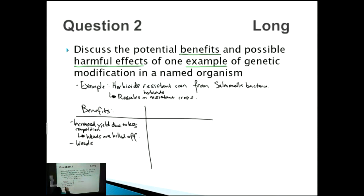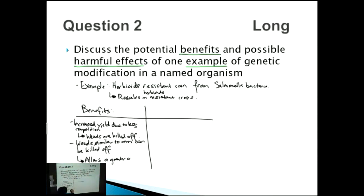Weeds which are similar to the corn can also be killed off, which allows increased growth and a greater crop yield. The way they mark this is they want you to talk about one benefit and then give more detail about why it's a benefit. Each point gives you a mark, so this section could potentially give you four marks.